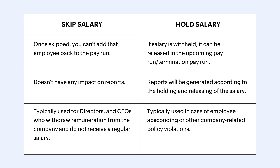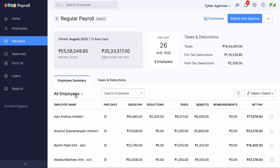Withholding doesn't have any impact on reports in the same way — reports will be generated according to the holding and releasing of the salary. Skipping is typically used for directors and CEOs who withdraw remuneration from the company and do not receive a regular salary, while withholding is typically used in cases of employee absconding or other company-related policy violations.